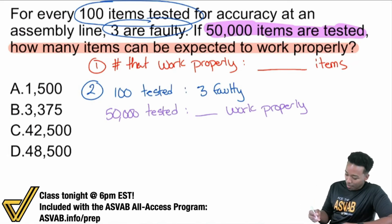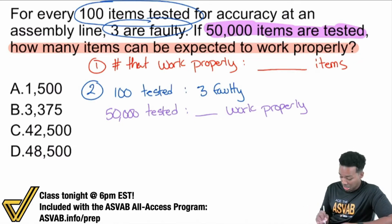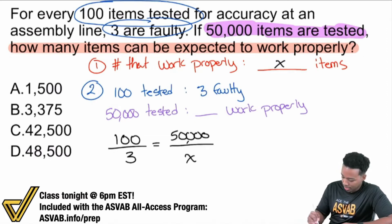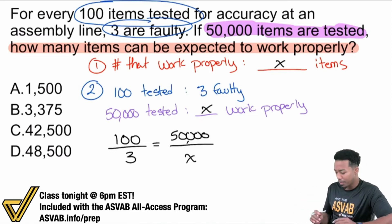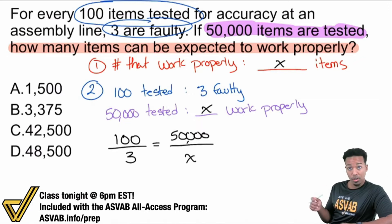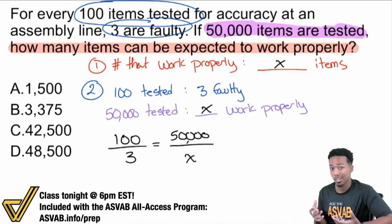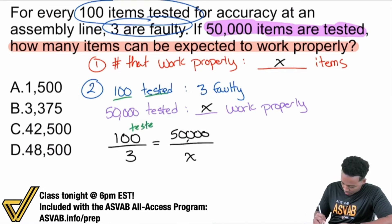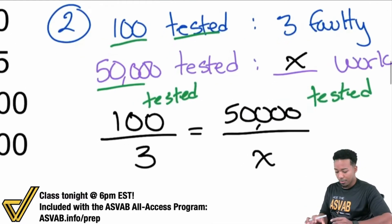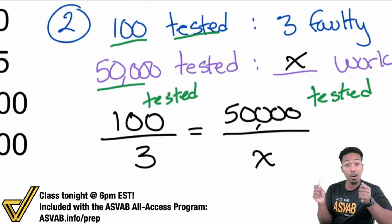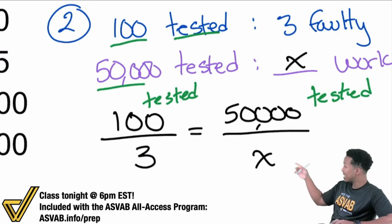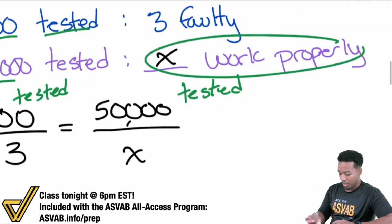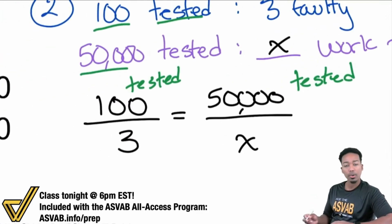We're looking for how many work properly. If we set up this proportion as 100 over 3 equals 50,000 over X, look carefully: the 100 represents the number tested, and 50,000 also represents the number tested. So at the numerators we have number tested and number tested — we are comparing the same things in the same way, and that's good. But if we look at the denominators, the 3 is the number that are faulty, and X is the number that work properly. We are no longer comparing the same things in the same way.